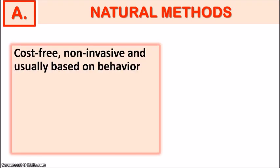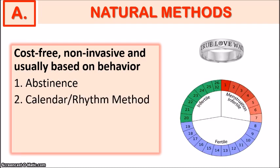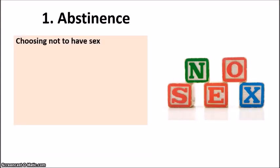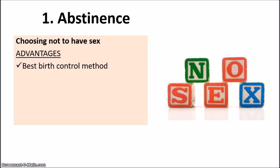Let's begin with the first category: the natural methods. These methods are usually cost-free, non-invasive, and based on behavior. The first common method is abstinence, second is the calendar or rhythm method, and third is the withdrawal method. Abstinence simply means choosing not to have sex, and obviously this method will require a lot of willpower, discipline, and restraint. It is the best birth control method, especially for young persons who are not in a committed relationship.